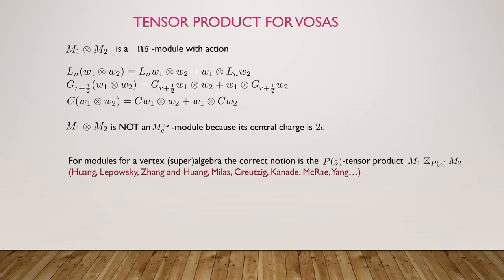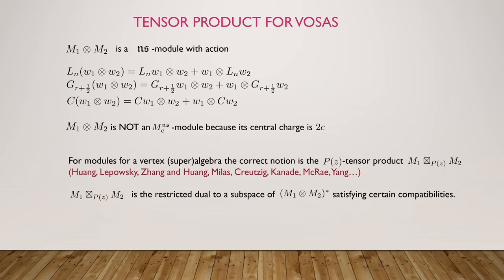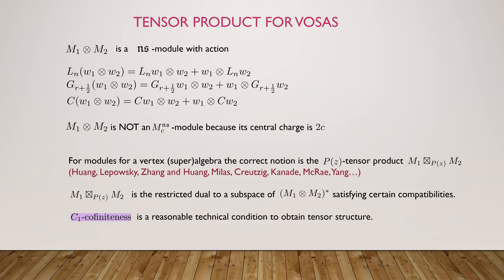The correct notion is the P(z) tensor product, defined by Huang and further generalized by Huang, Miles, Thomas, Shashank, Robert, Jingwei, and many more to the supercase and further study. It's a restricted dual to a subspace of the dual of M1 tensor M2 as vector spaces, satisfying certain compatibilities, and it allows us to build associativity and braiding. C1 cofiniteness is a reasonable technical condition to obtain tensor structure. In the rational case, C2 cofiniteness guaranteed we could use the old tensor product theory, and C1 cofiniteness is a relaxed condition that still gives us graded tensor structure in general.